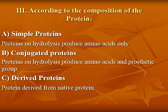Proteins can also be classified according to composition into simple proteins, which consist of only amino acids; conjugated proteins, which consist of amino acids and a prosthetic group; and derived proteins, which are derived from native proteins.